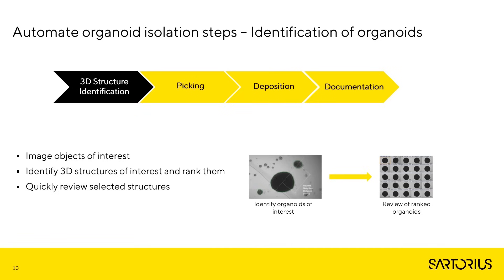Therefore, using cell selector during the analyses, we have the possibility to select and filter using multiple parameters such as size, sphericity, object darkness, radius, and fluorescence intensity. It greatly aids in quick identification and isolation of organoids with similar properties.